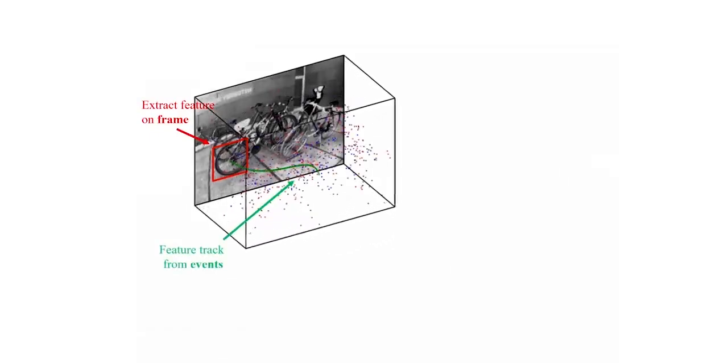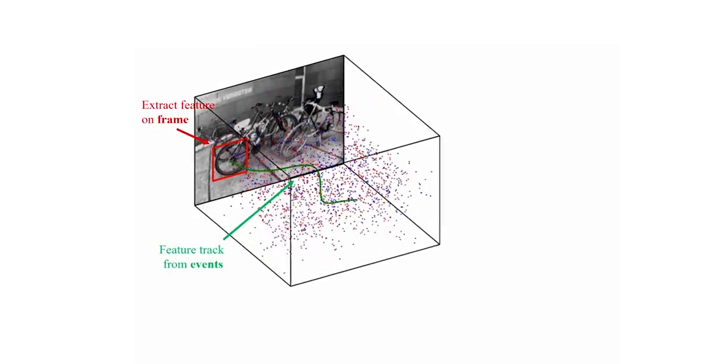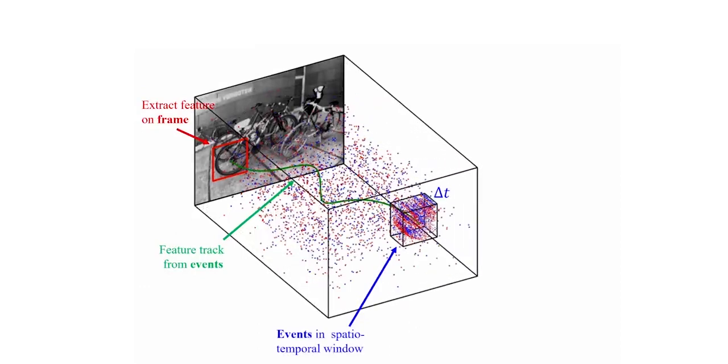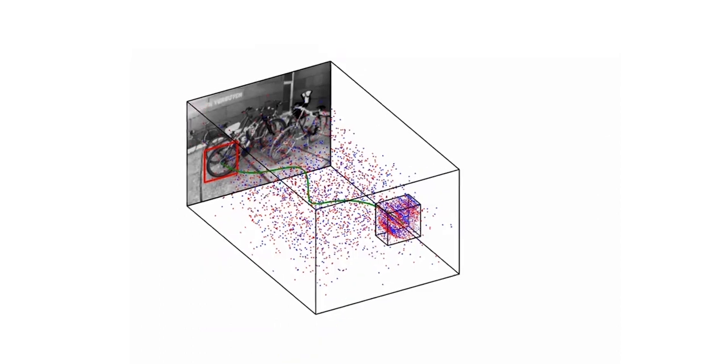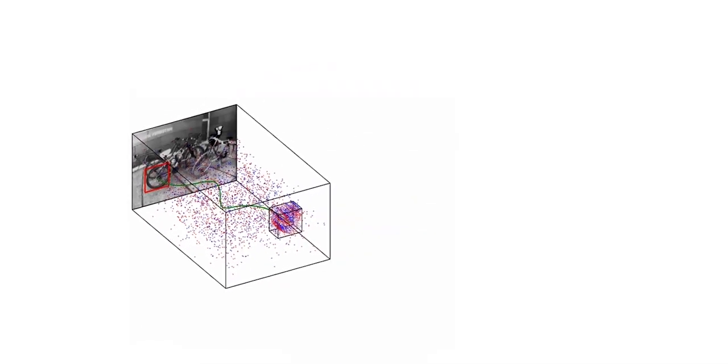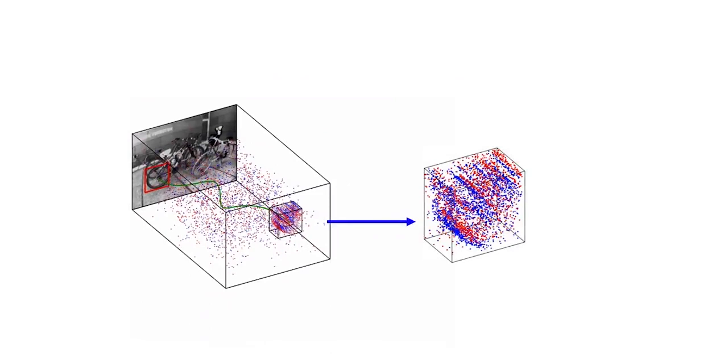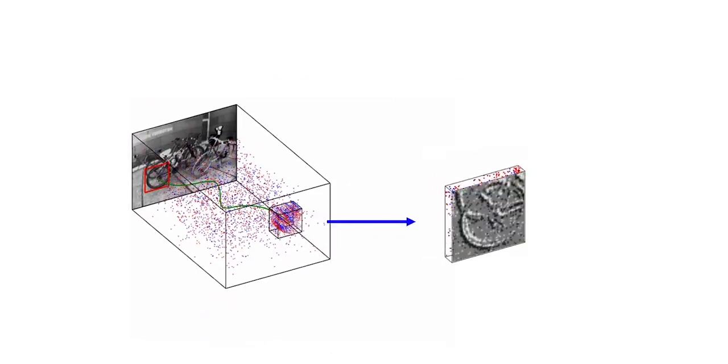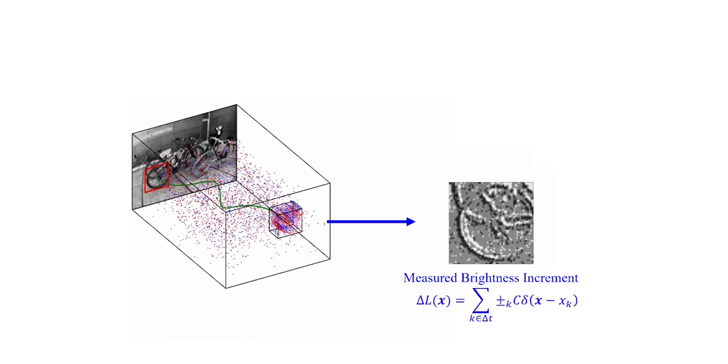Our method works by extracting features on the initial frame which we track over time using the events. At any given time, we consider a local spatial temporal neighborhood of events around a feature which we aggregate into a measured brightness increment patch.